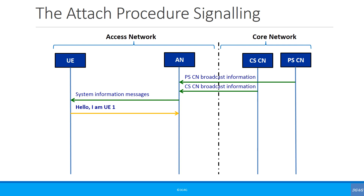Once it has read the system information, it will use the common channel and connect to the access network, sending a message saying hello, I'm UE1. The problem with common channels is that any UE wanting to communicate with the access network for the first time — when it's in idle mode — will use the common channel. So there is a good chance that this message might clash with another UE trying the same thing. Sometimes this can cause problems when the network is busy, and the message doesn't reach the access network.